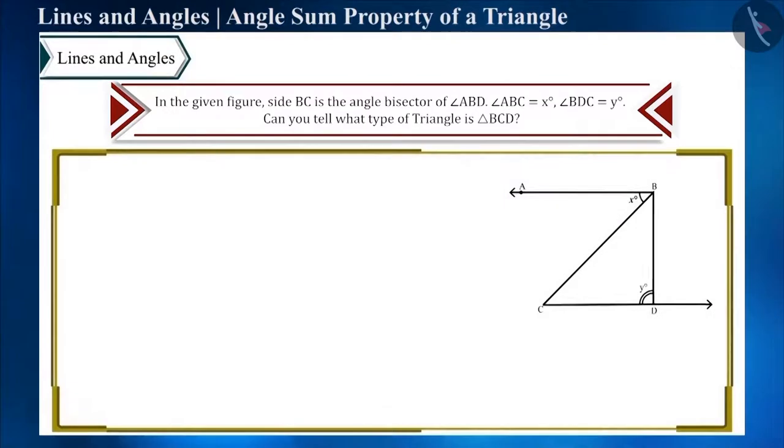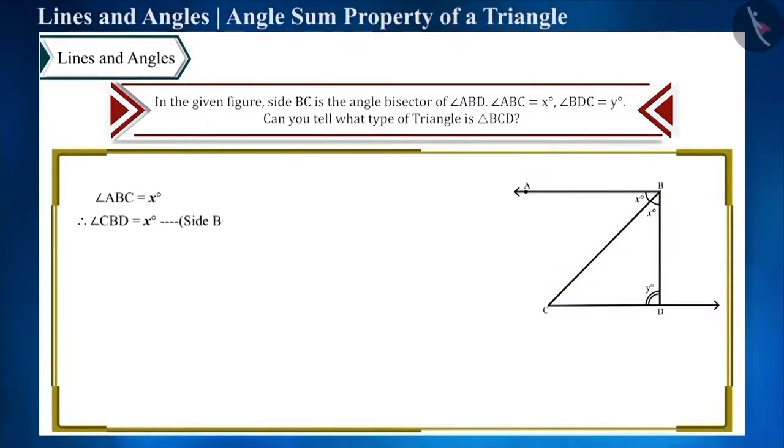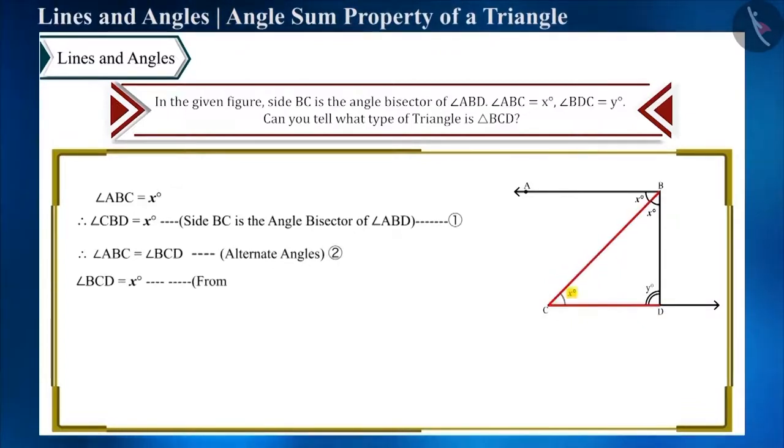Friends, as angle ABC is x degrees, angle CBD will also be x degrees because side BC is the angle bisector of angle ABD. Angle ABC is equal to angle BCD as they are alternate angles. Thus angle BCD is also x degrees, and angle BCD equals angle CBD equals x degrees, so triangle BCD is an isosceles triangle.